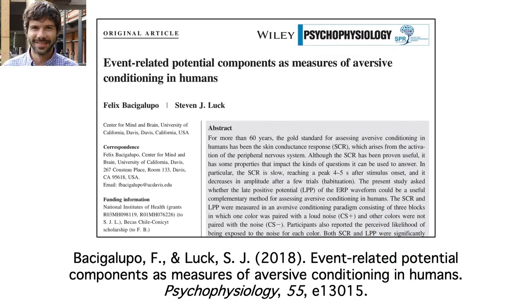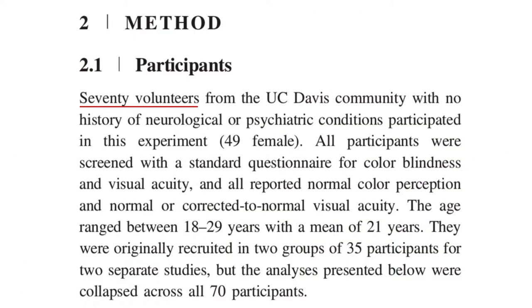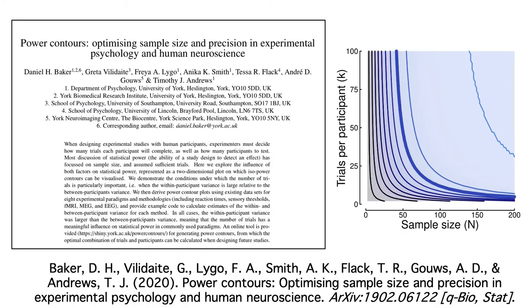Let's take a look at the methods section of the paper, starting with the participants. We had a total of 70 participants, which is much more than you'd see in most ERP studies. A typical ERP study using within-subjects comparisons would have between 15 and 30 participants. Some ERP studies have more, especially when they're looking at between-group comparisons or individual differences. Statistical power in ERP experiments depends on both the number of subjects and the number of trials per subject. If you want to know more, I recommend this paper by Baker et al.